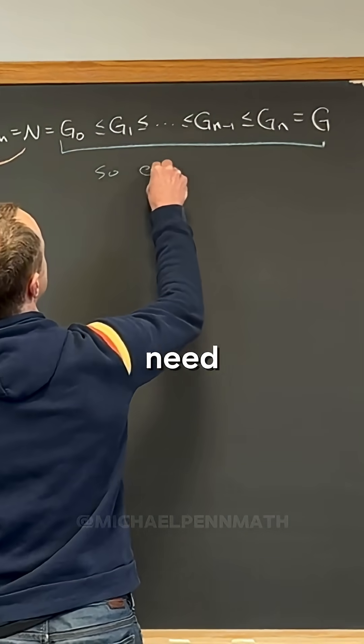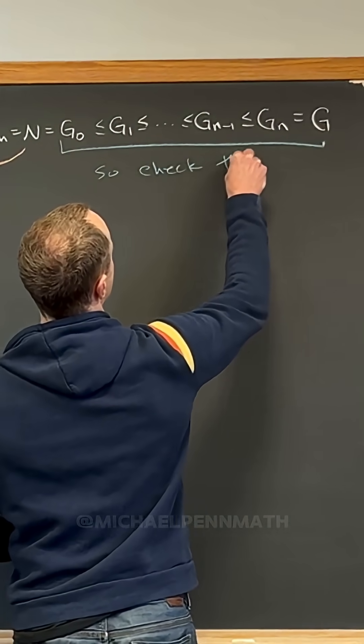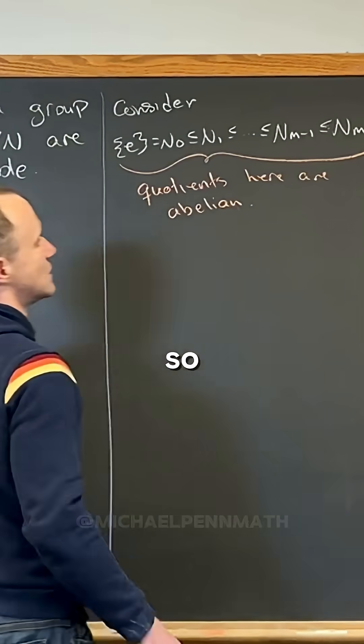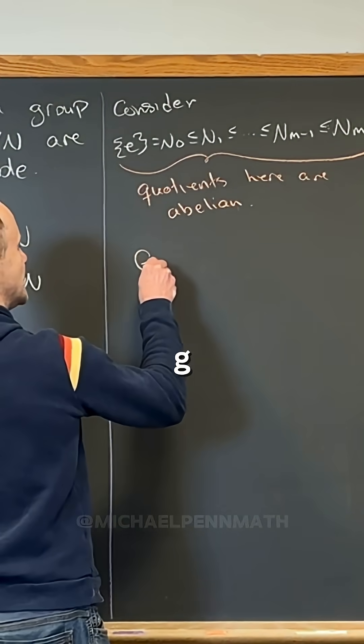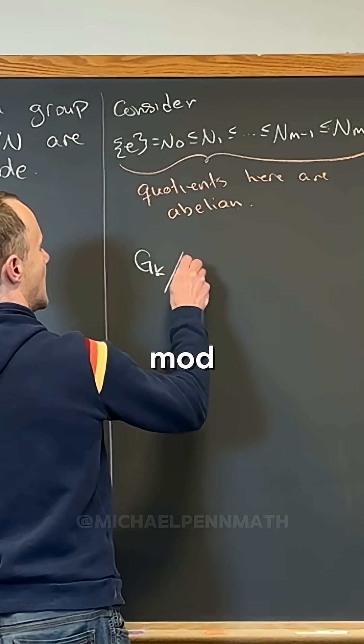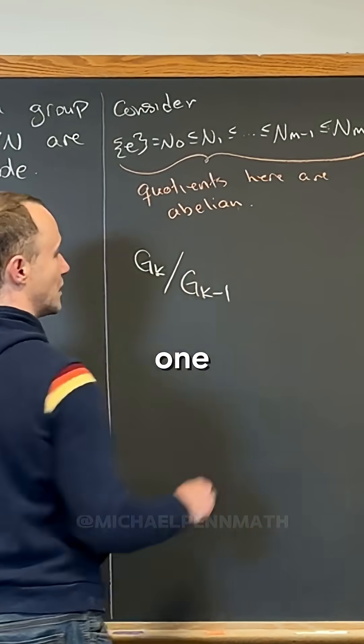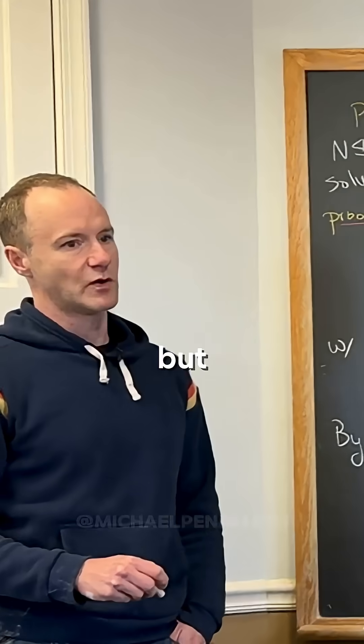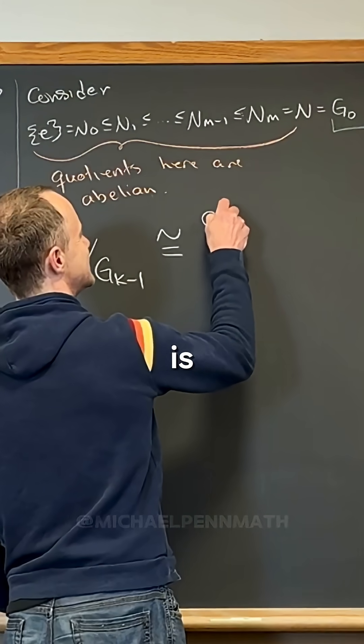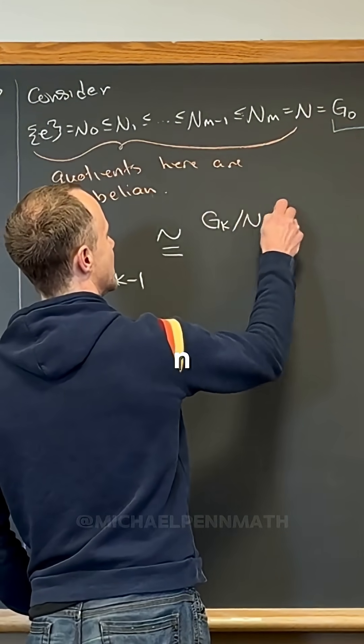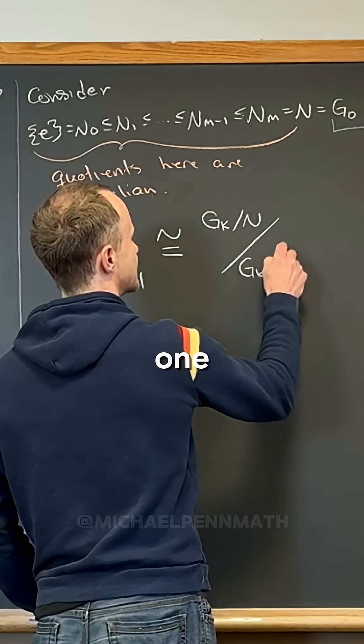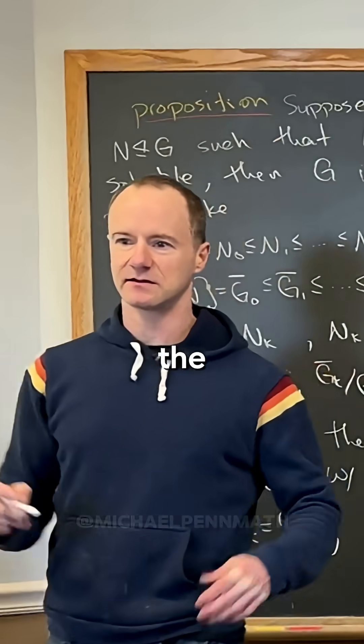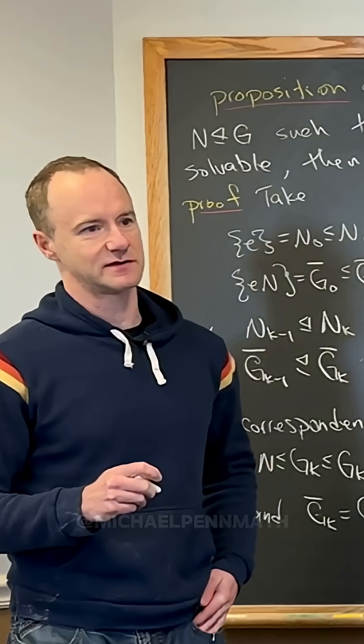So we need to check these. Let's look at, for example, gk mod gk-1. We want that to be abelian, right? But what does the second isomorphism theorem tell us? This is the same thing as gk mod n, mod gk-1 mod n—the denominators cancel.